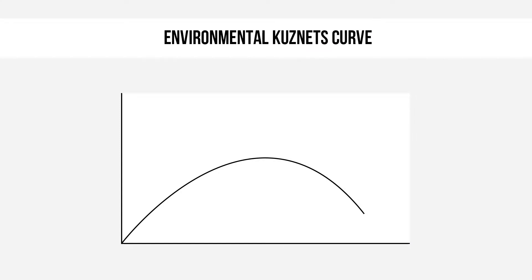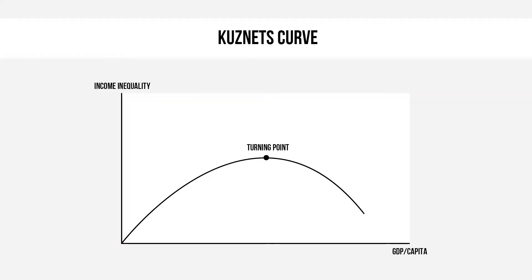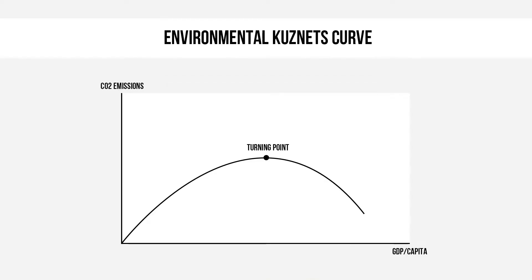This curve represents an inverted U-shape, where per capita income and CO2 emissions are positively correlated to the point where the trend turns and the opposite relationship can be observed. The name of the EKC curve is inspired by the similar correlation between income inequality and economic growth proposed by the economist Simon Kuznets. The curve also works if we replace CO2 emissions with general environmental damage and income per capita with GDP growth.